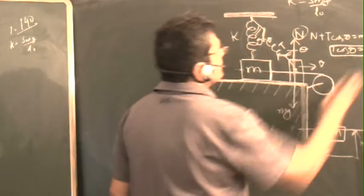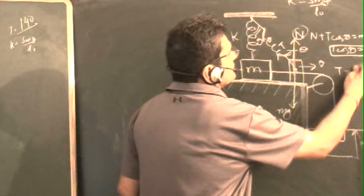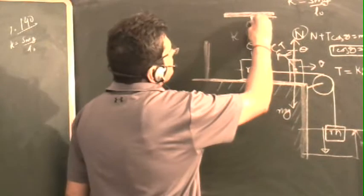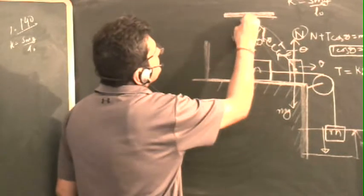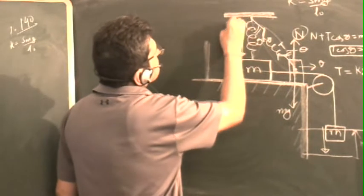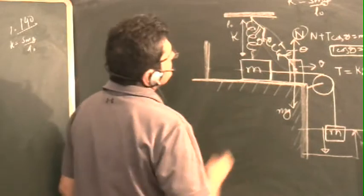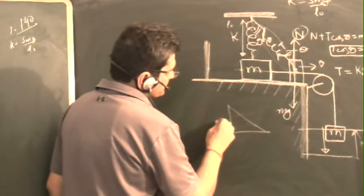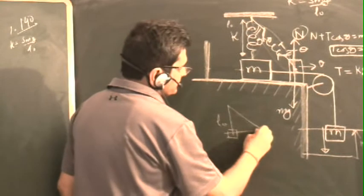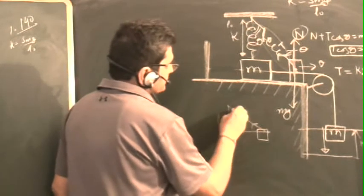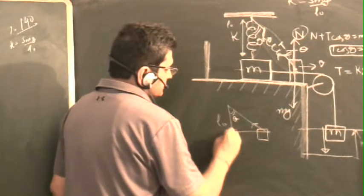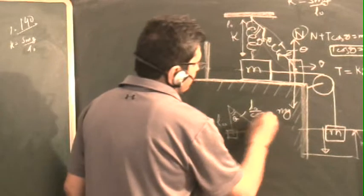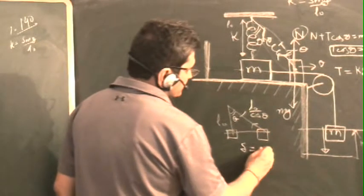What is T? T is equal to K into delta, where delta is the extension. Let us find what will be this length. If this is L0, the initial length is L0. This is theta. So this spring, when it comes in this position, this is L0. And when the spring comes in this position, it is making angle theta, and this will be L0 upon cos theta.